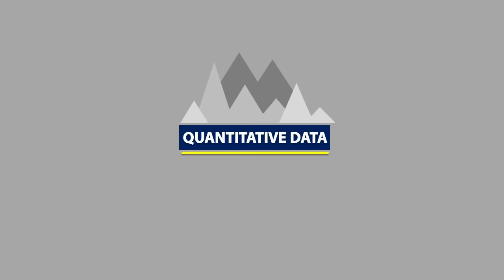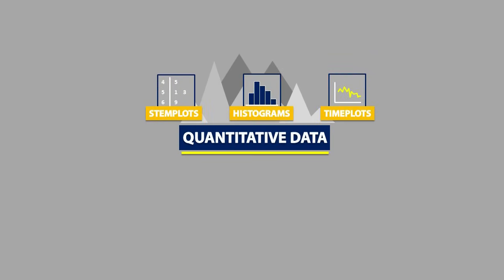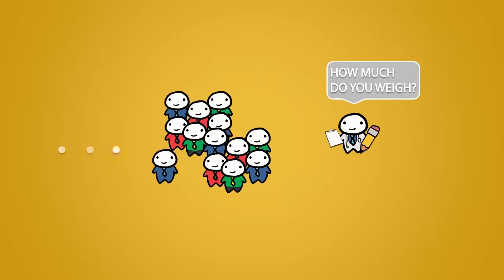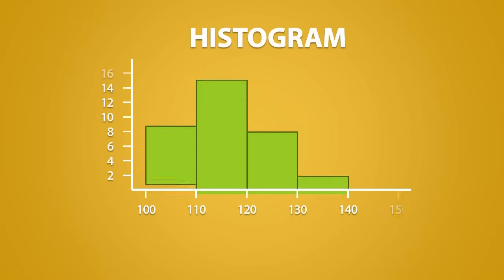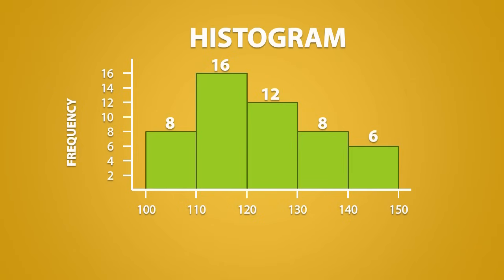For quantitative data, we often use stem plots, histograms, and time plots to show information. We'll talk about histograms first. After collecting data from a population or sample, we can use a histogram to help us display the distribution of the data we collected. The frequency, or count, is displayed on one axis and each count tells us how many data values fall within a predetermined interval on the other axis. This axis corresponds to the variable we have just measured.